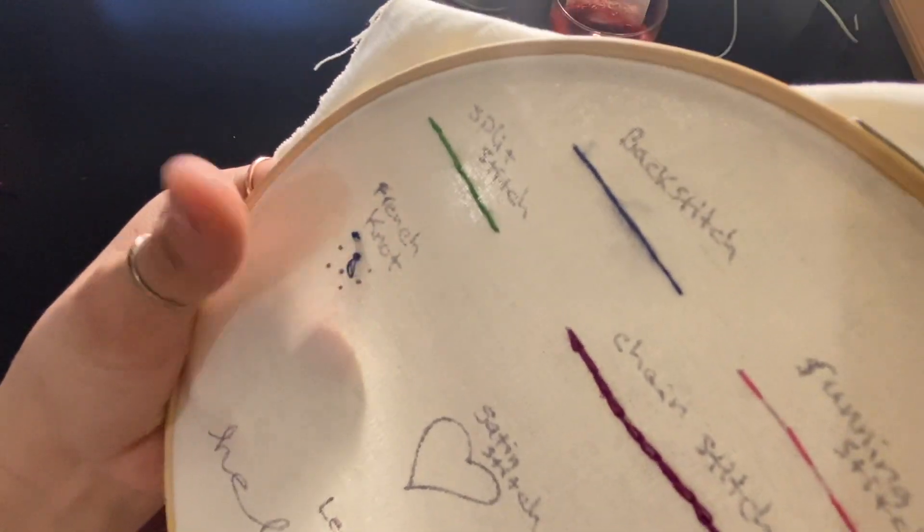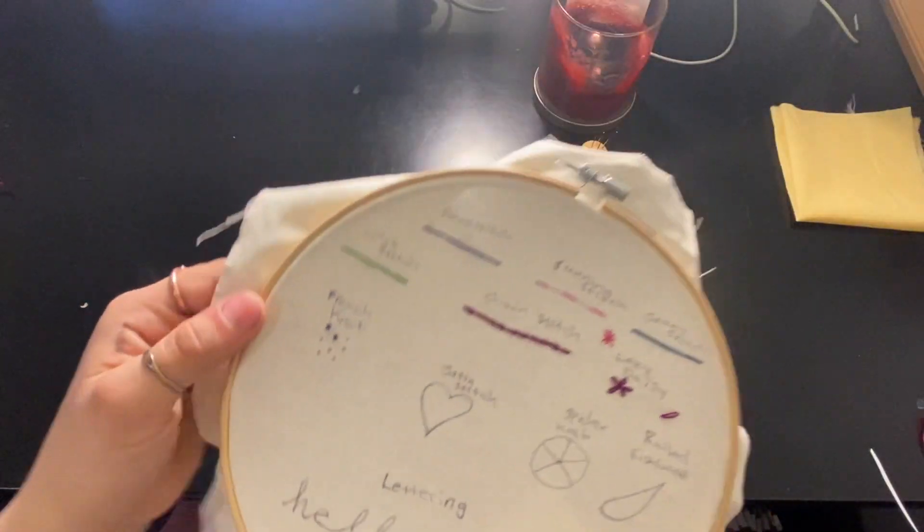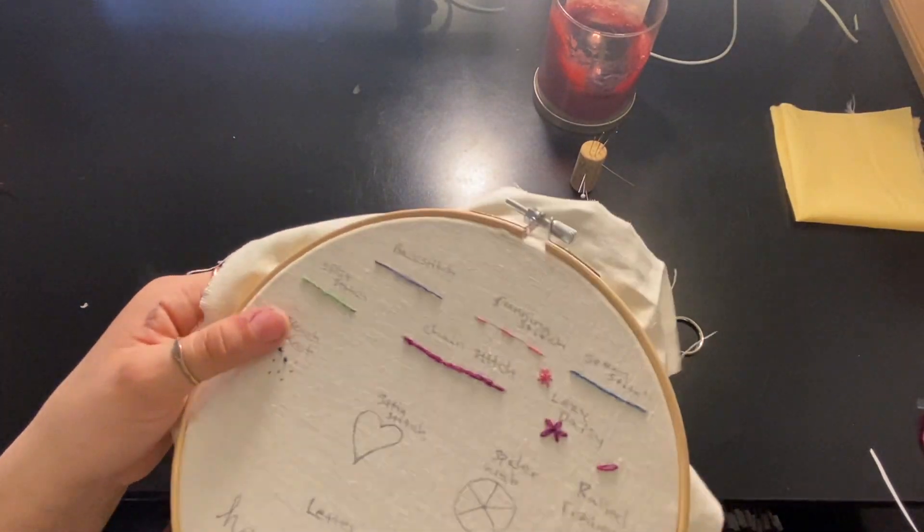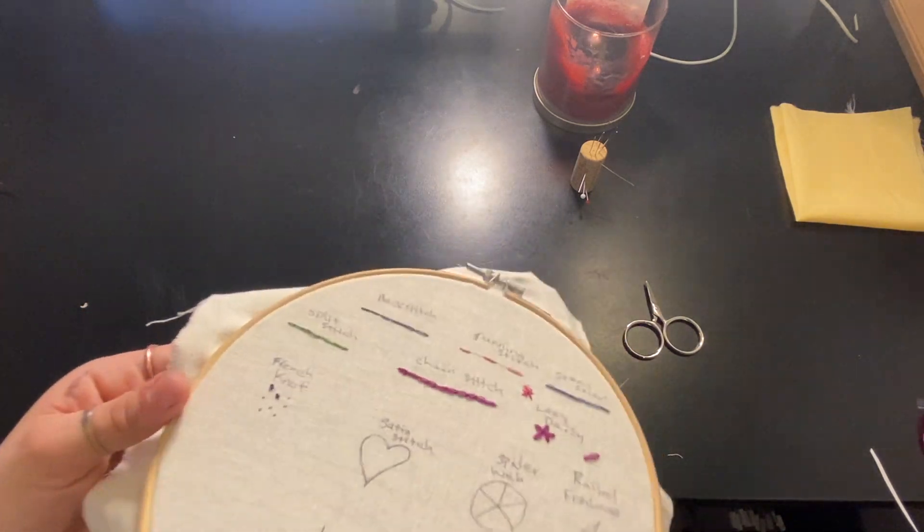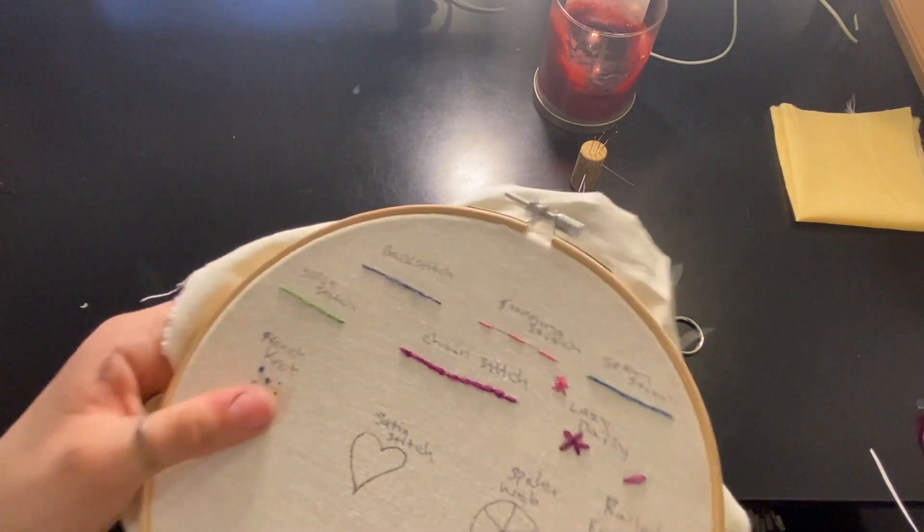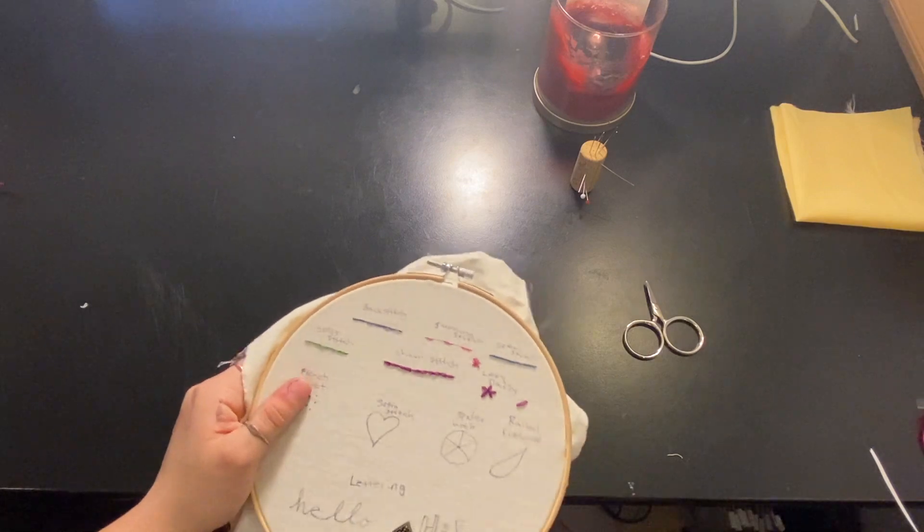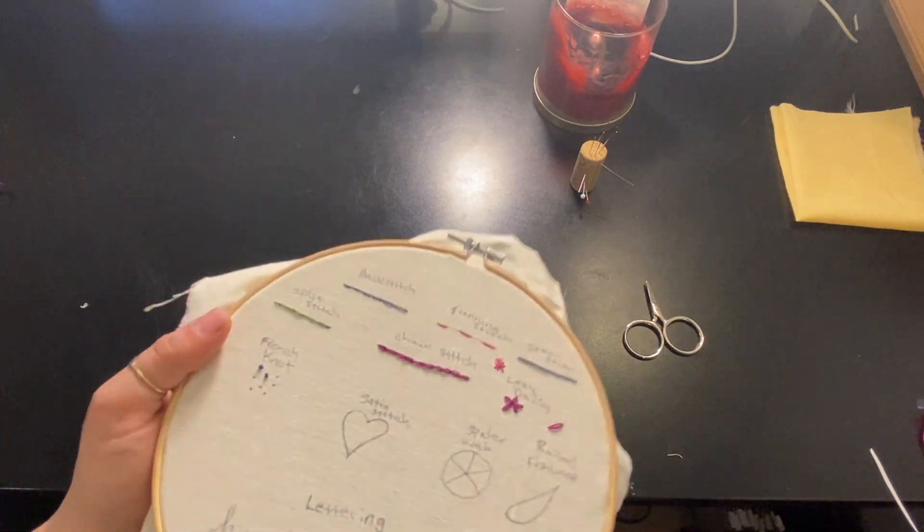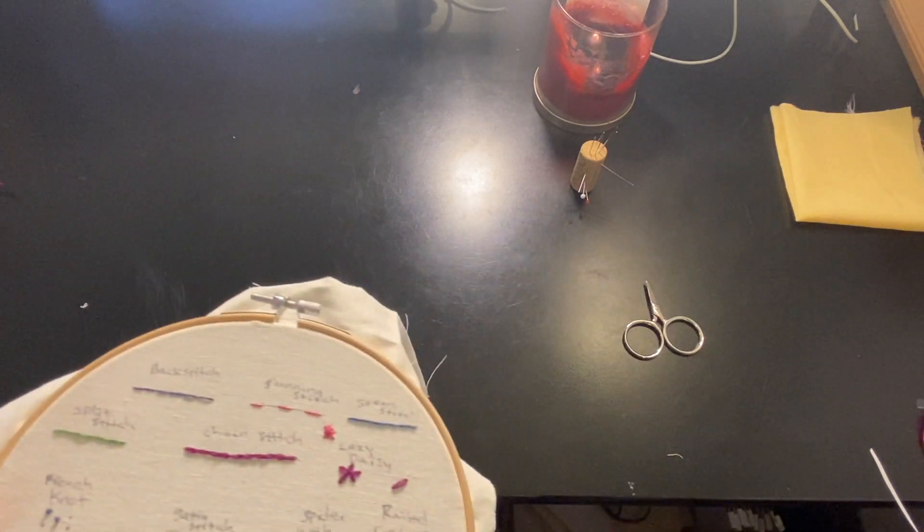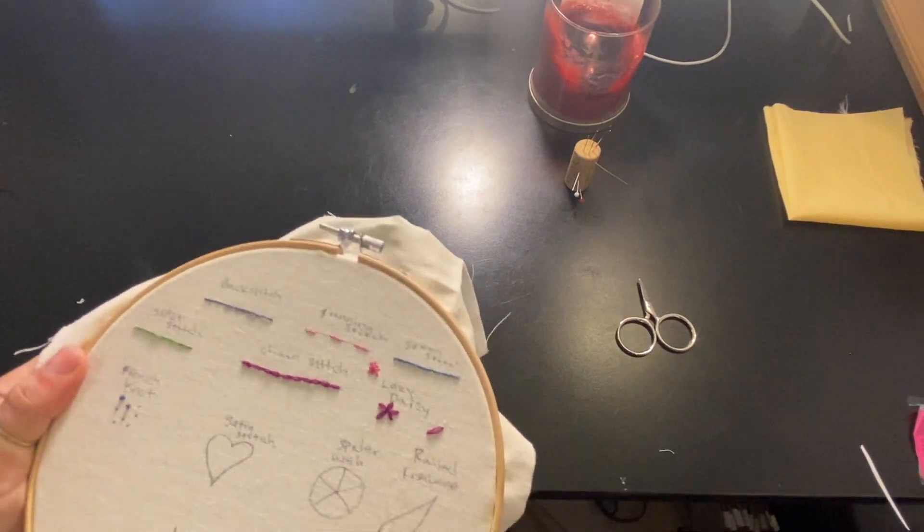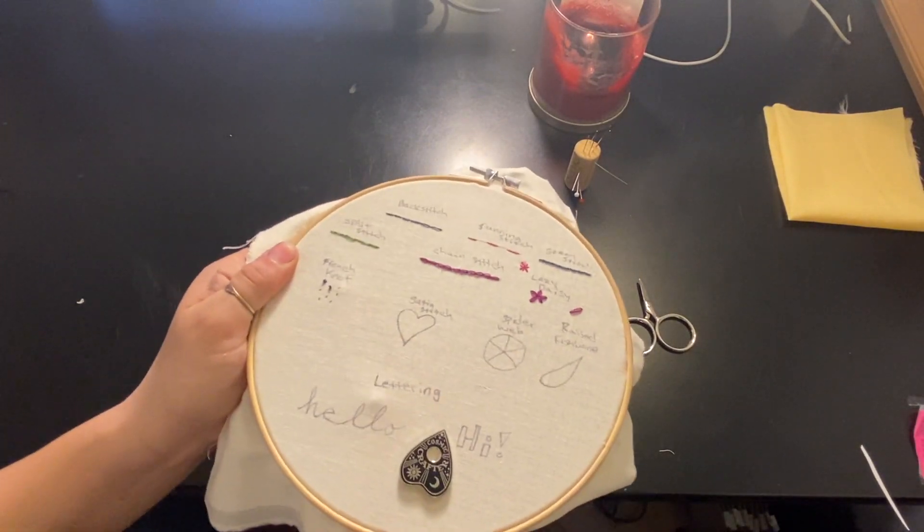The reason why I like to keep the excess thread out of the way is it keeps the knot from catching too early and creating like an extra little loop outside of the knot. You might find that happens sometimes—it's fine, it happens, it's a little bit of character. But that is a way to keep that from happening if that is what your goal is. So we're just going to finish up the rest of these little dots.